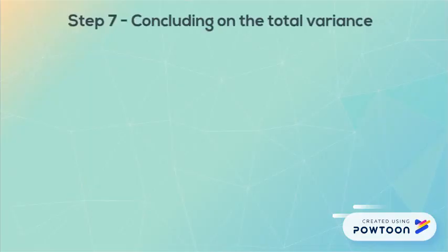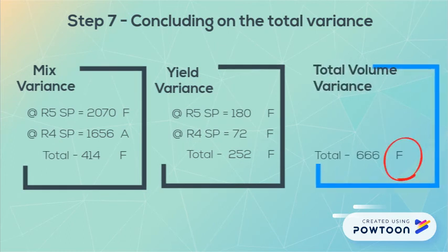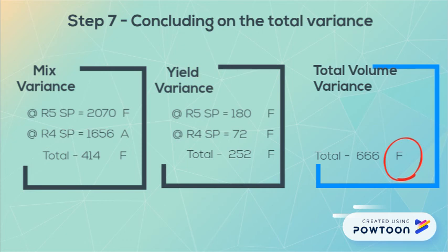Lastly, we need to see how these variances talk to each other. We used less materials than we should have, resulting in a favourable volume variance. This was due to both the yield variance and the mix variance being favourable. We used less of the expensive material and more of the cheap materials, and we can conclude that the cheap materials did not have any negative impact on quality, as we still used less than we budgeted for.